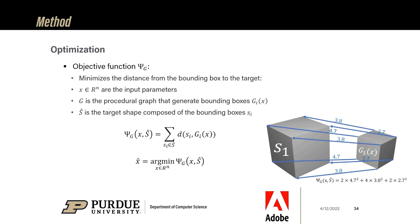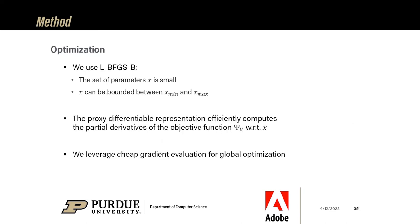To formalize: after an edit is made, on one side we have the target bounding boxes set by the user, and on the other side the procedural bounding boxes G. Our objective is to minimize the distance between these two sets. To solve this optimization problem, we use LBFGSB, a second-order method that converges very fast. We can afford to use it because the parameter set is small, and it works with bounds on parameters. To accelerate computation of derivatives, we build a proxy differentiable representation while evaluating the model. Since evaluating the gradient takes less than a millisecond, we can also run some flavor of global optimization.